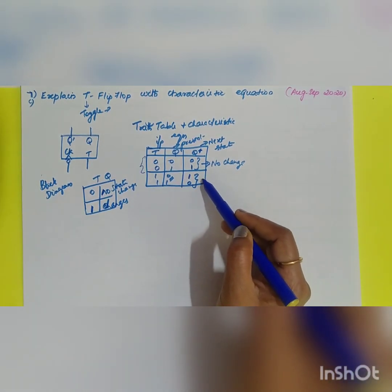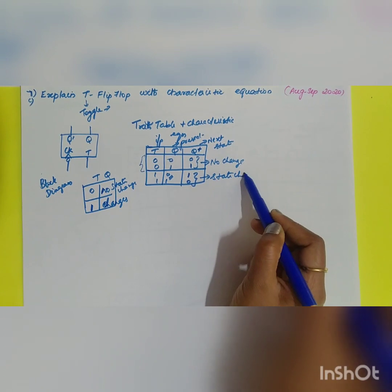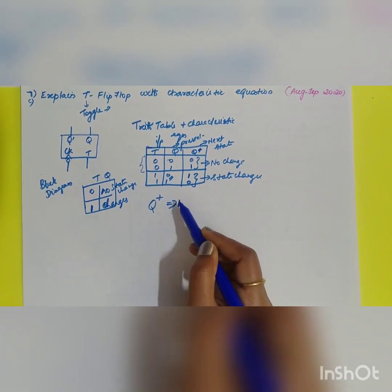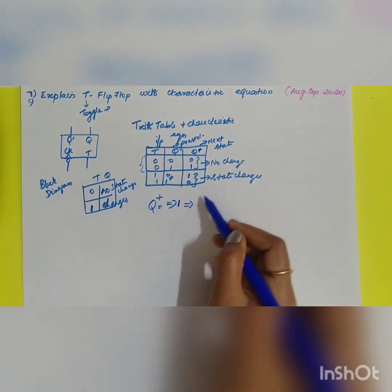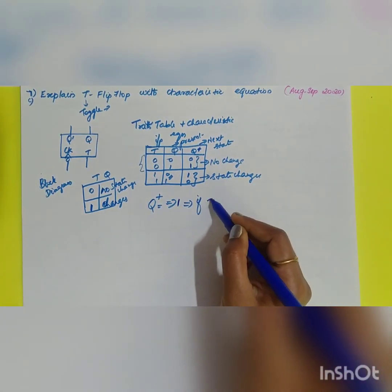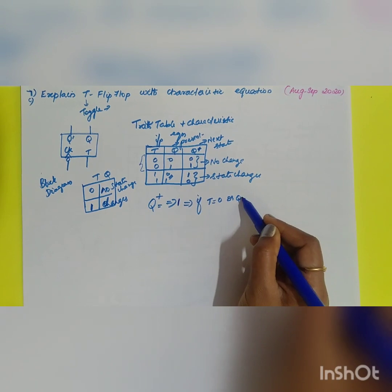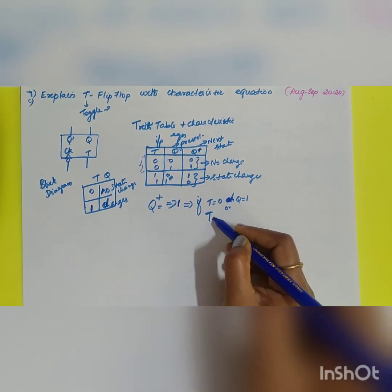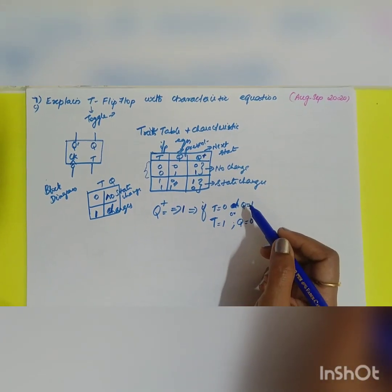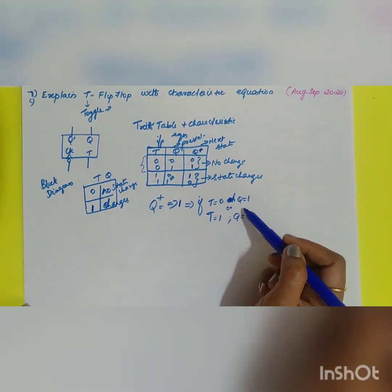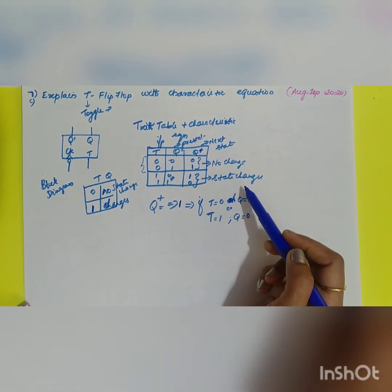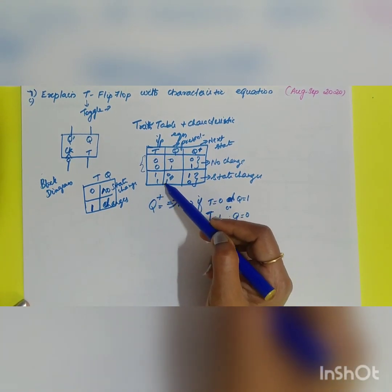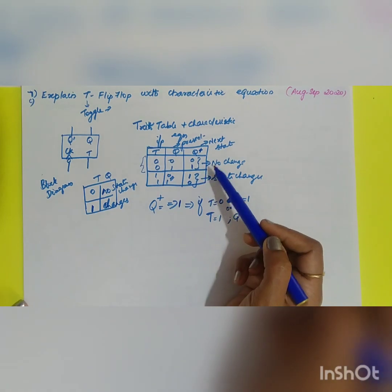In general, Q+ equals 1 under two conditions: if T=0 and Q=1, or if T=1 and Q=0 — that is, when the input and present state are different, the output is 1. When they are the same (both 0 or both 1), the output is 0.